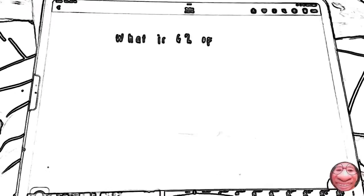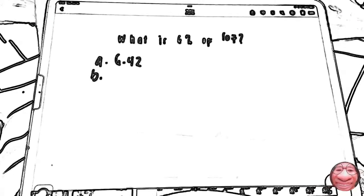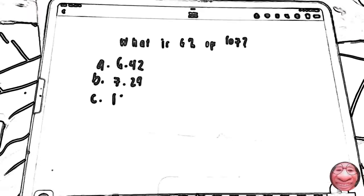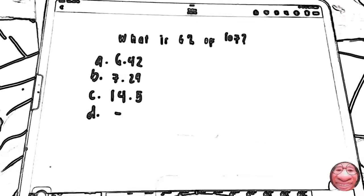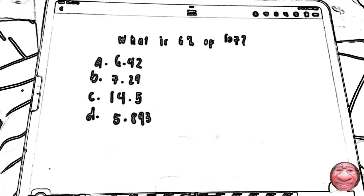Now, let's do it with decimals. What is 6% of 107? Letter A, 6.42. Letter B, 7.29. Letter C, 14.5. Letter D, 5.893.